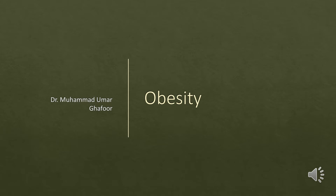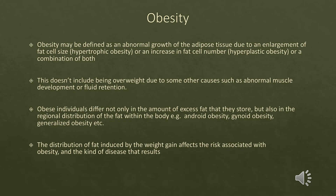We have been covering non-communicable diseases from a community medicine and public health point of view. Today we will be discussing obesity. In short, obesity is excess body fat. Specifically, obesity is an abnormal growth of adipose tissue, which may be due to an enlargement of fat cell size — called hypertrophic obesity — or an increase in fat cell number, called hyperplastic obesity, or a combination of both.